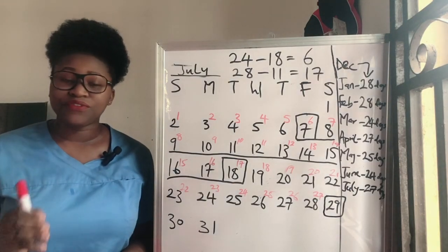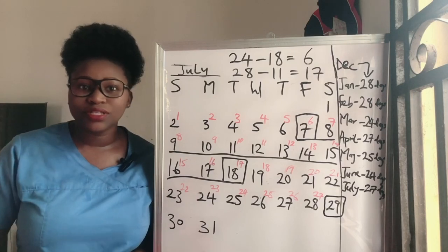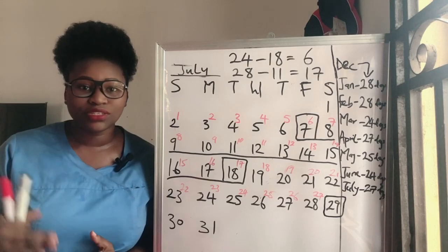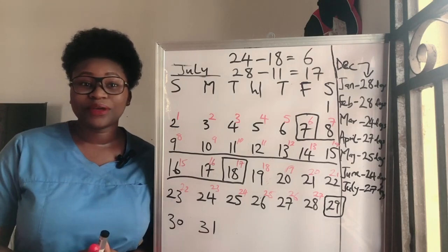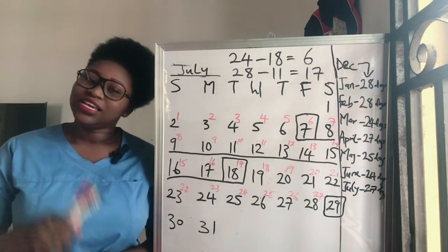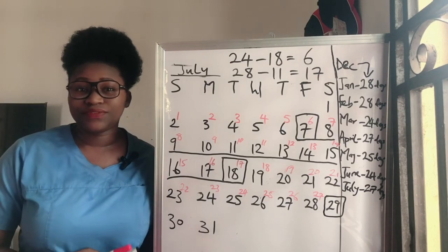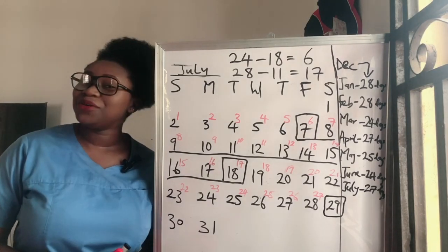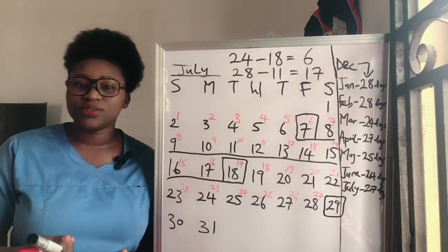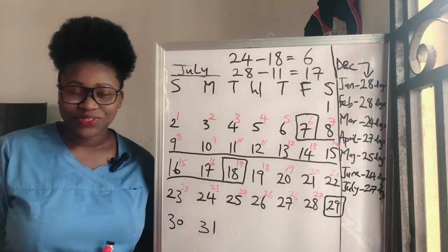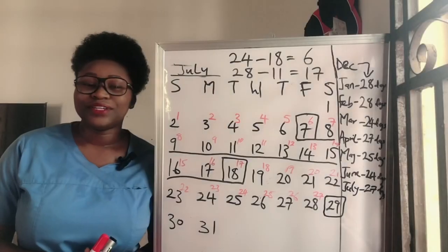If you're trying to conceive and have irregular cycles, use both the calendar method and an ovulation test strip — this video is not sponsored by any brand, just get whichever brand works for you. You've now learned how to calculate your ovulation dates and know your safe and fertile days. Our next video will be about how to conceive a baby boy or girl if you're looking for a specific gender. If you found this helpful, give it a thumbs up, leave any questions in the comments, and subscribe to join our little family!